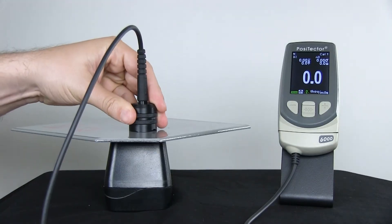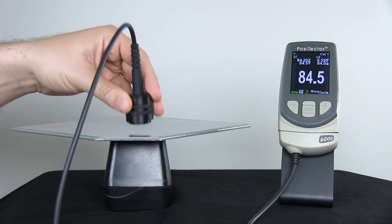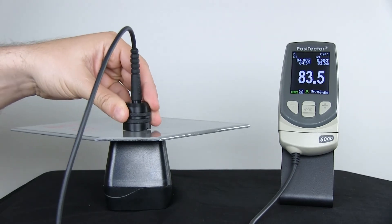All new Positector 6000 probe models feature faster measurement speeds and are compatible with the award-winning Positector platform.